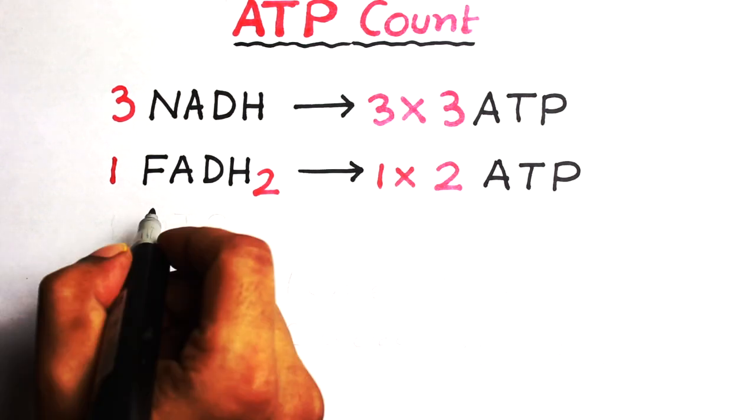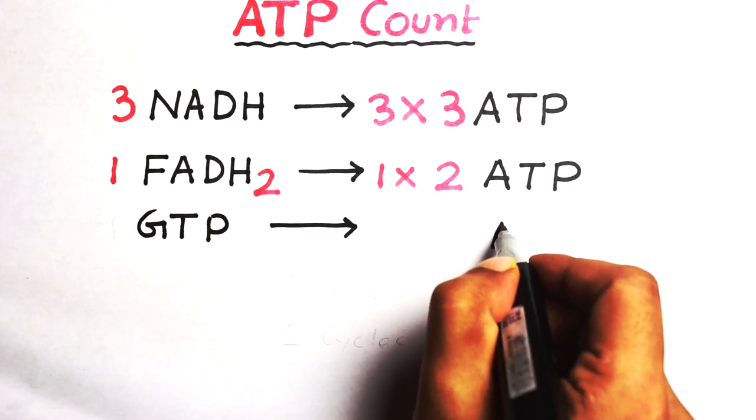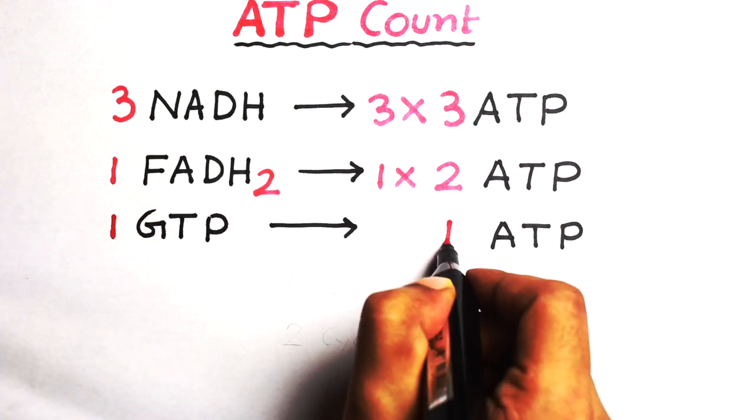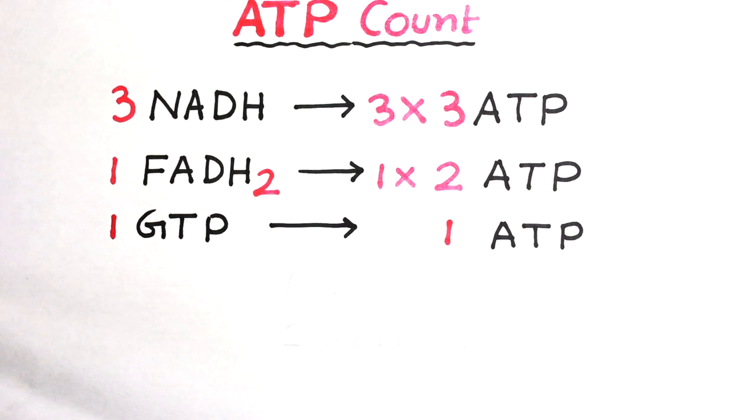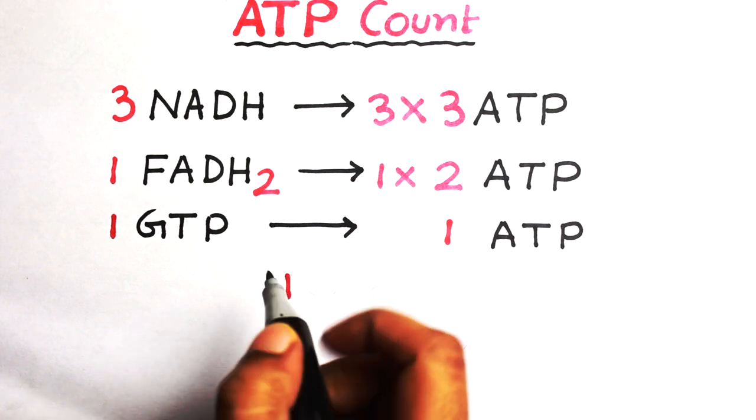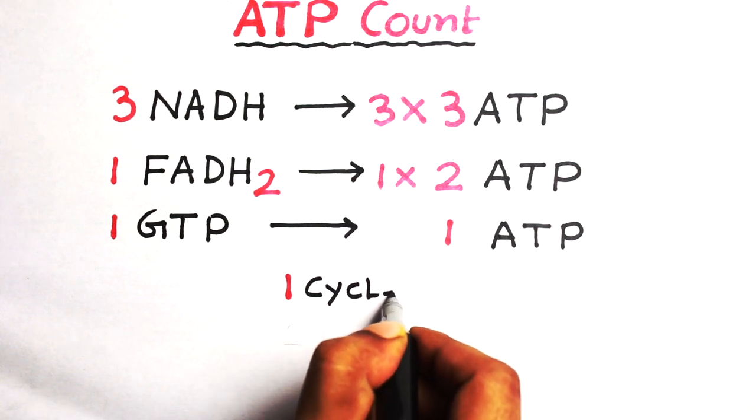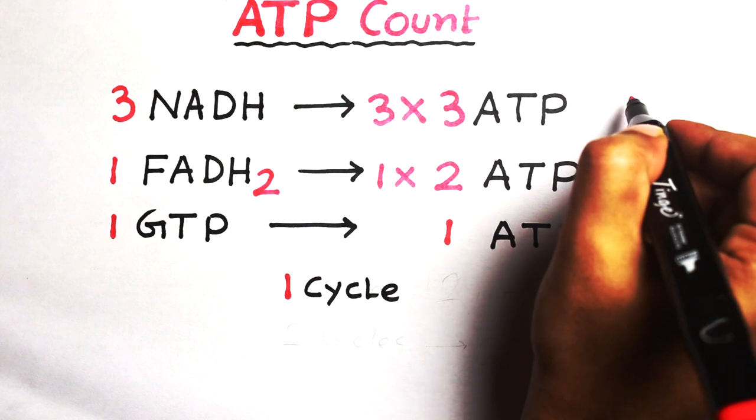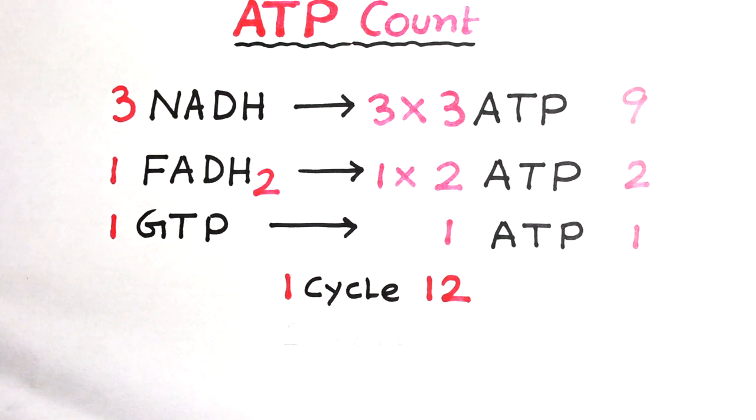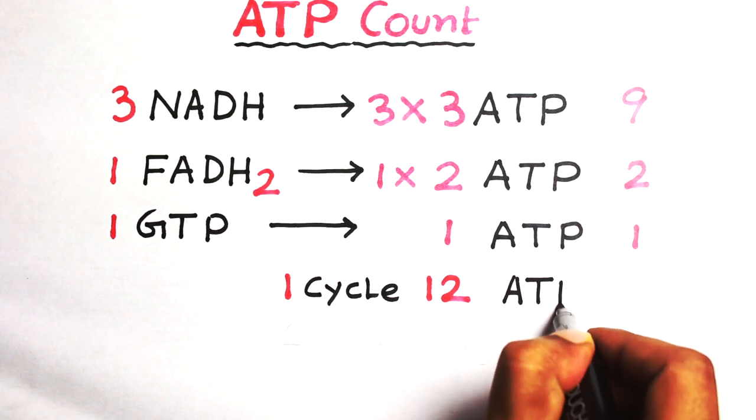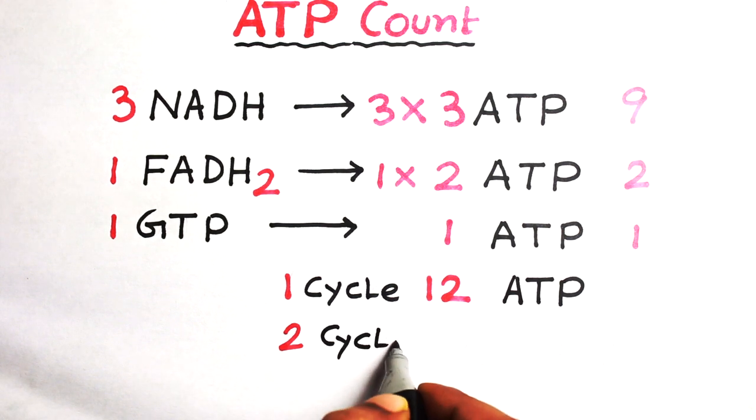Now one GTP is produced, which is equivalent to one ATP. So the total number of ATP production is nine plus two plus one, which is twelve. So one complete cycle produces 12 ATP and two cycles produce 24 ATP.